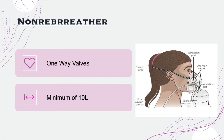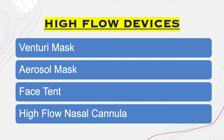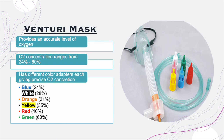Moving on to high flow devices, we'll discuss the Venturi mask, aerosol mask, face tent, and high flow nasal cannula. The Venturi mask provides an accurate level of oxygenation and delivers a range of oxygen from 24 to 60%. It uses color-coded adapters — as shown in the image — where each color indicates a specific oxygen level. For example, the blue adapter provides 24%, the white adapter 28%, and the orange adapter 31%, and so on.